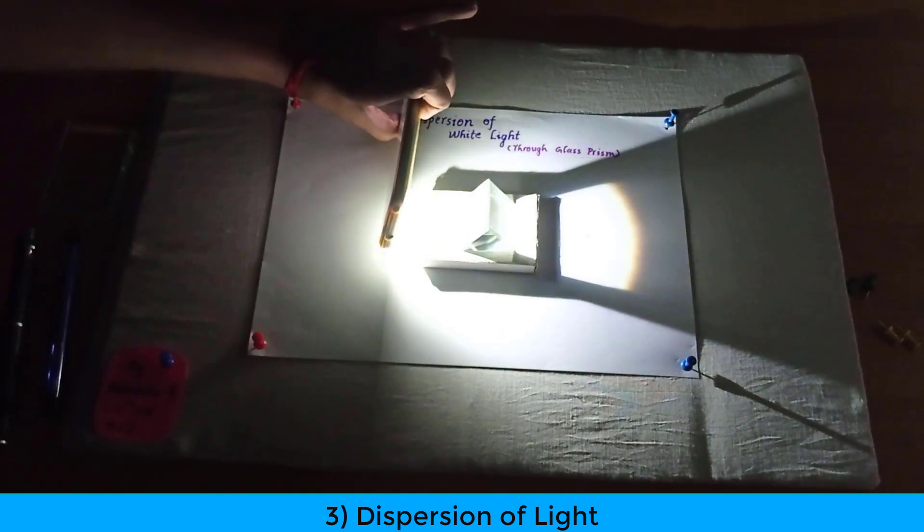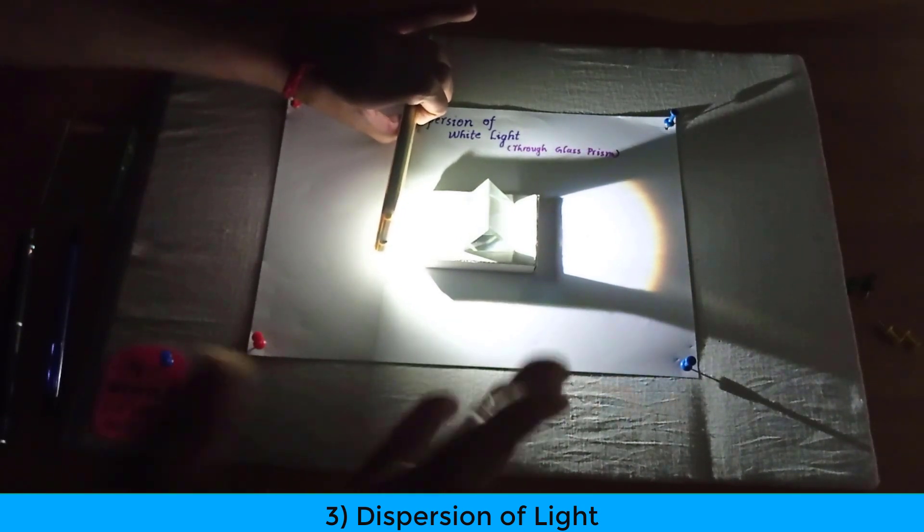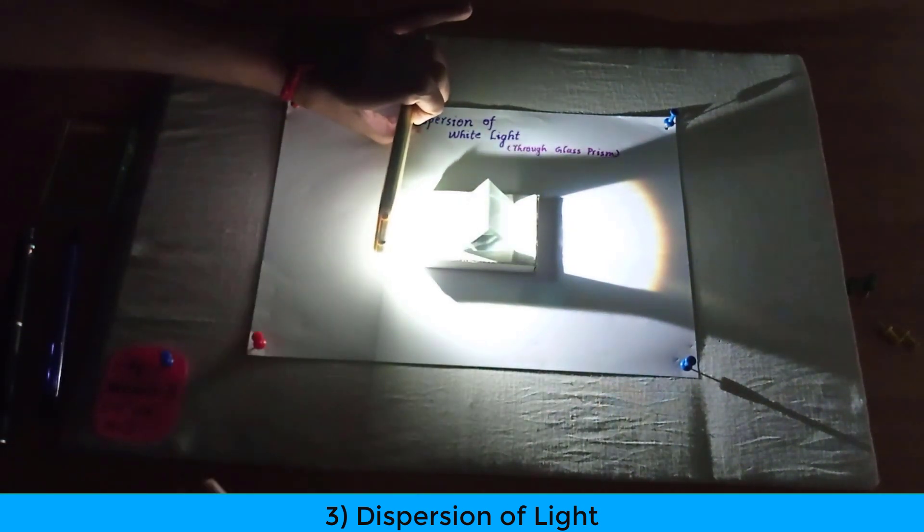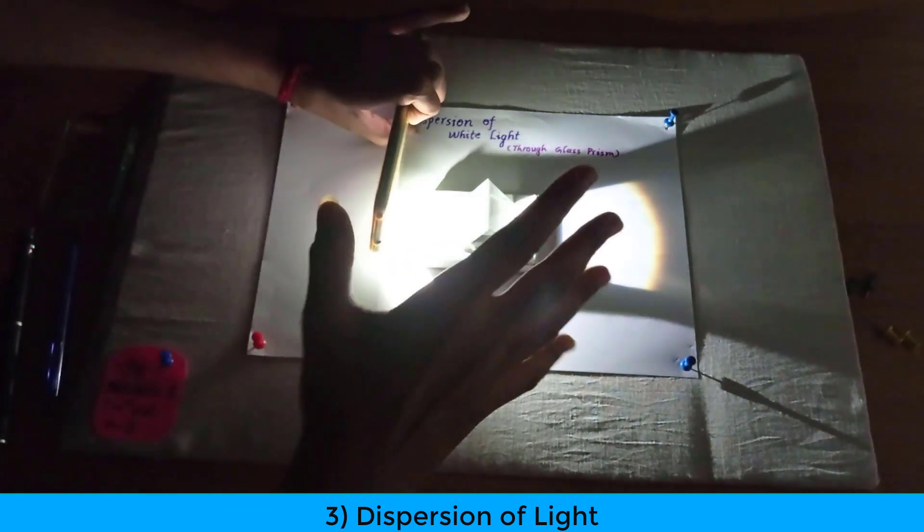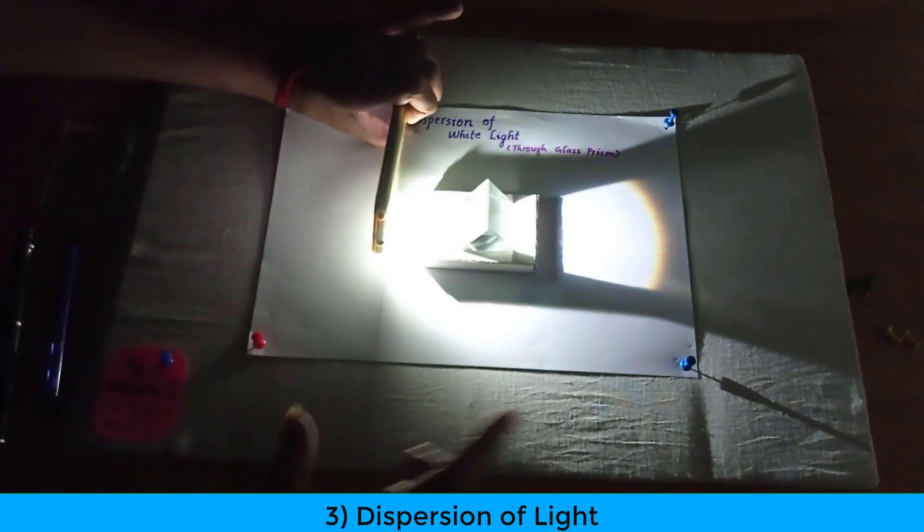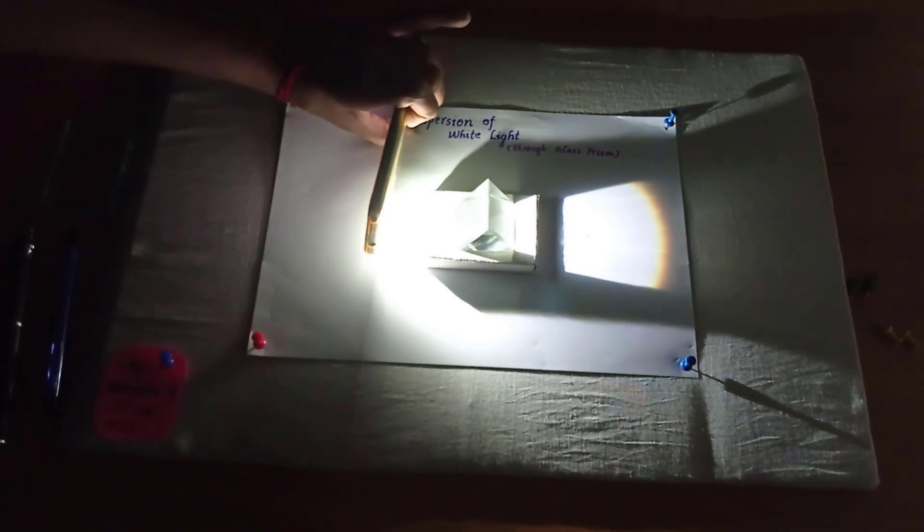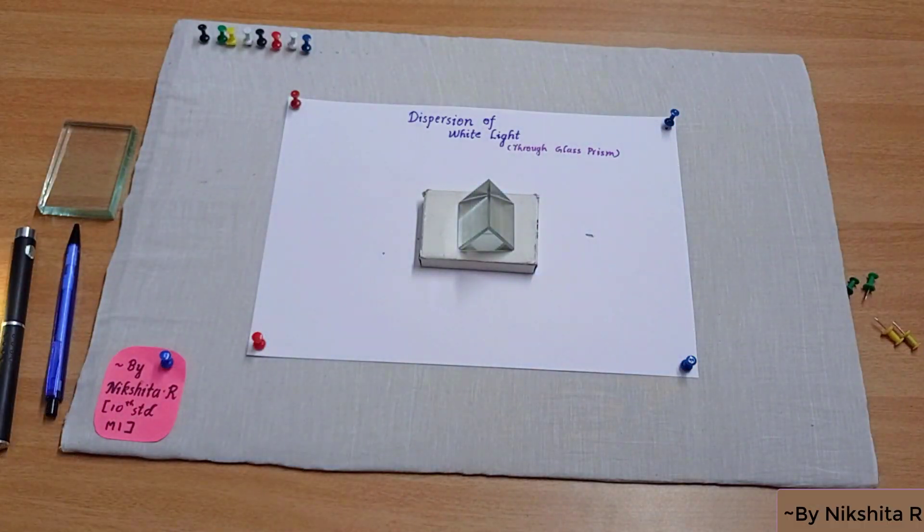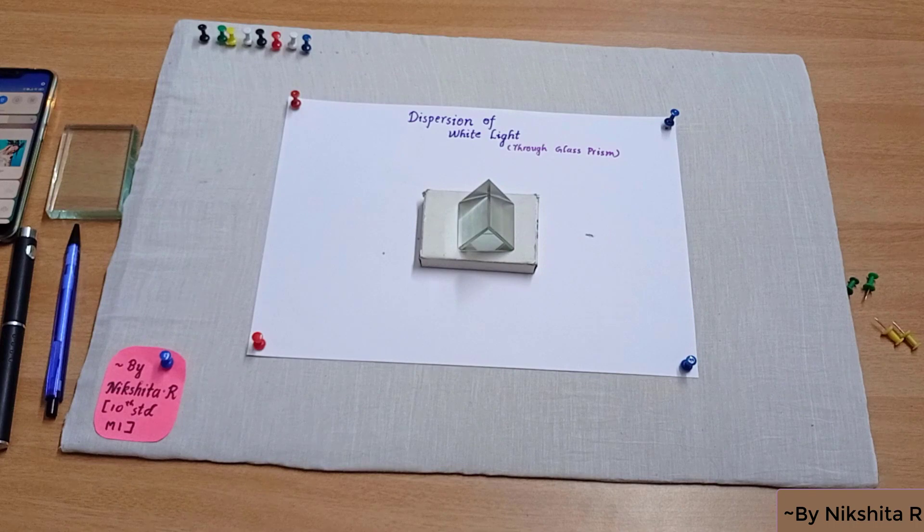So now the same concept or the phenomenon behind the formation of the rainbow is this only. And you know friends the first person to try this activity on a glass prism was done by Isaac Newton. And that's all about today's video and I hope you all enjoyed this video and learned something new from this video. Thank you everyone.